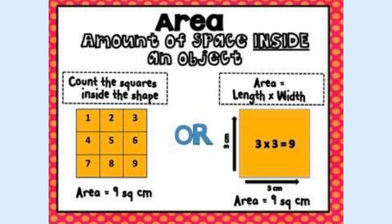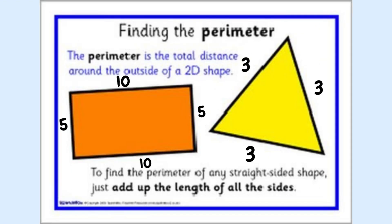Area is the amount of space inside of an object. To find area, you either have to count the squares inside the shape or use the formula: area equals length times width. In this example on the left, you would count the nine squares in the square, or you would do three times three equals nine to find the area.